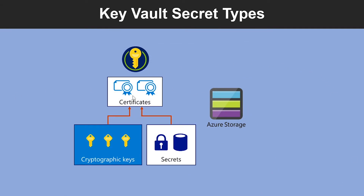Now let's look into the different types of Key Vault secret types. First, let's look into cryptographic keys. Key Vaults support multiple key types and algorithms, and use hardware security modules for high-value keys. Another type is secrets — Key Vault provides secure storage of secrets such as passwords and database connection strings. Another type is certificates — Key Vault supports certificates which are built on top of keys and secrets and add an automated renewal feature as well.